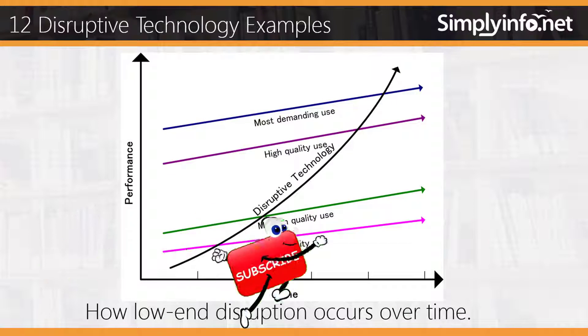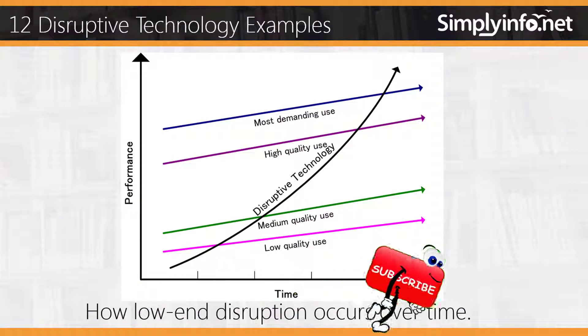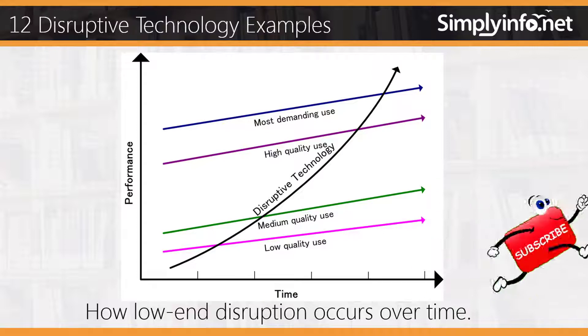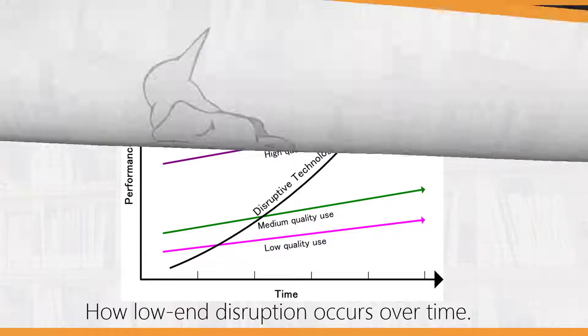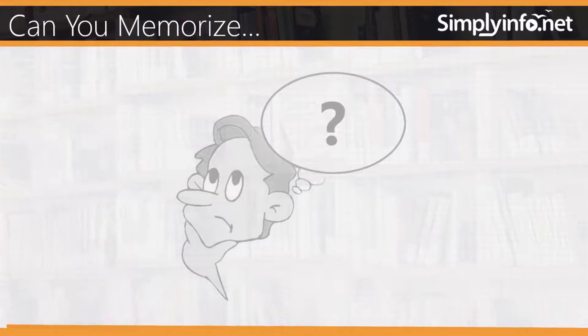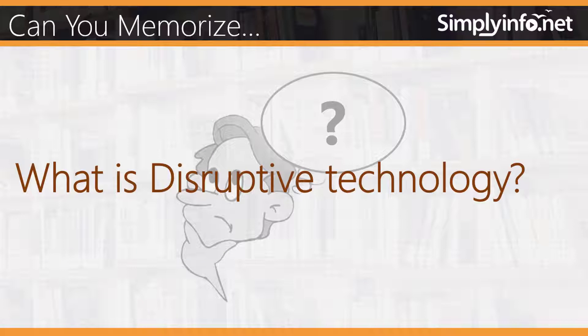How does disruption occur over time? Can you memorize what is disruptive technology?